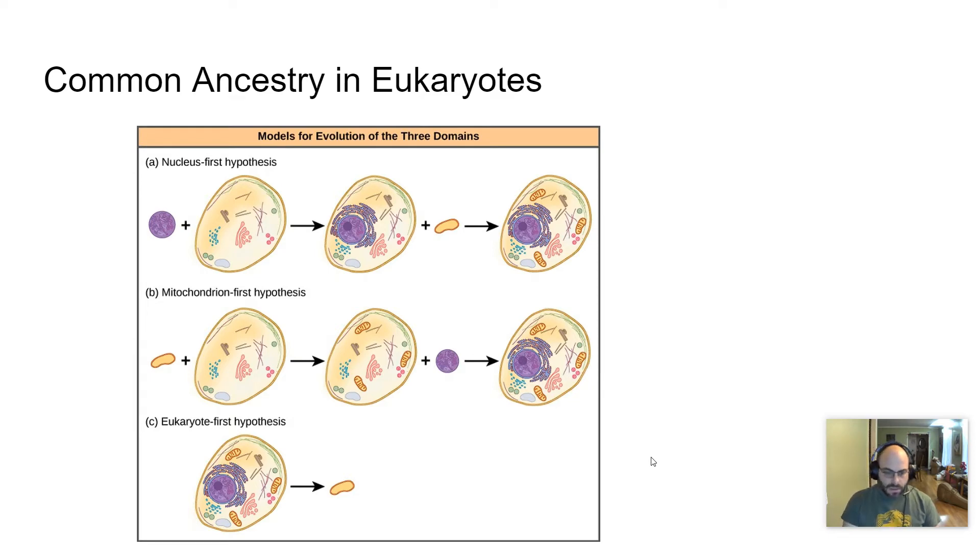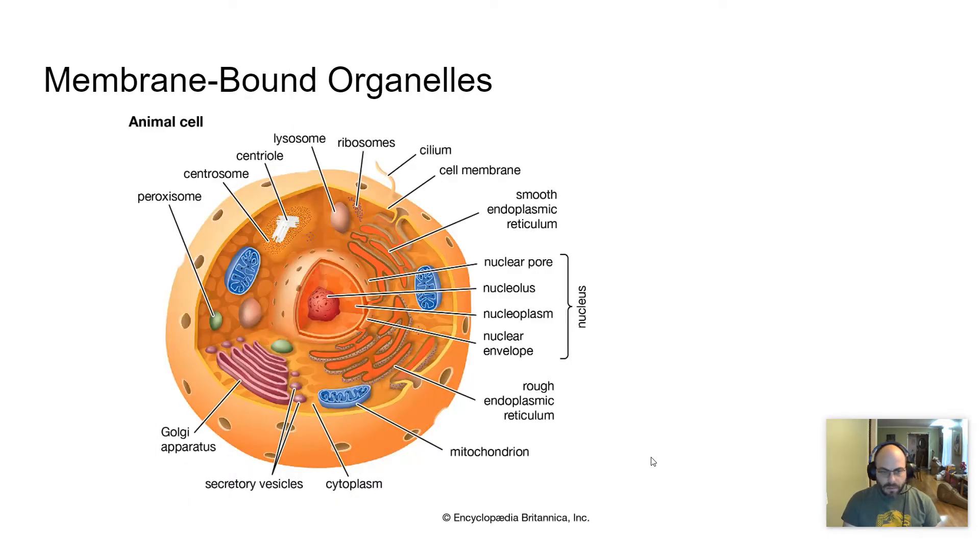So first, let's look at the fact that they all have membrane-bound organelles. Membrane-bound organelles are structural evidence of the link between all eukaryotic organisms. We talked about some of this when we talked about the endomembrane hypothesis, the idea that mitochondria and chloroplasts were probably, at one point, prokaryotic organisms that were able to do cellular respiration and photosynthesis, respectively.